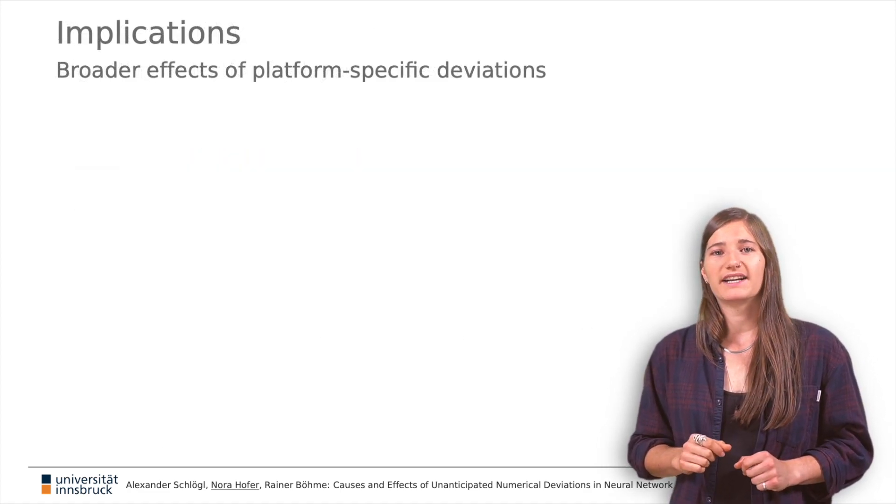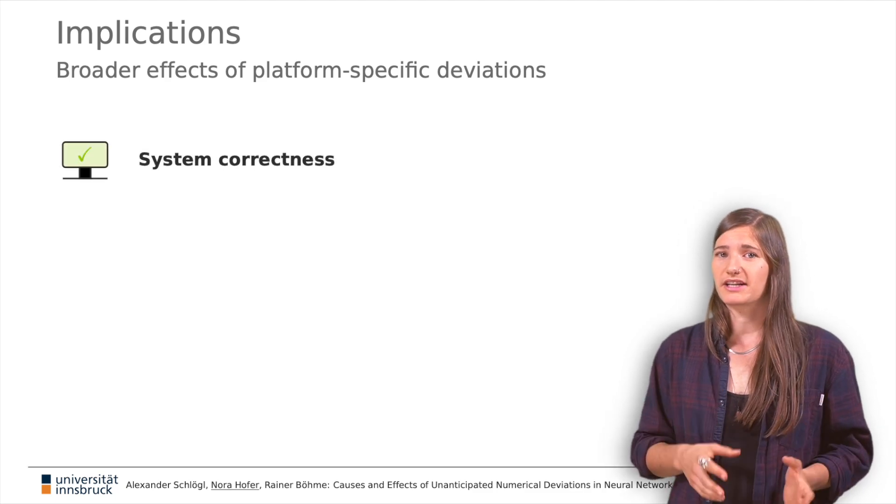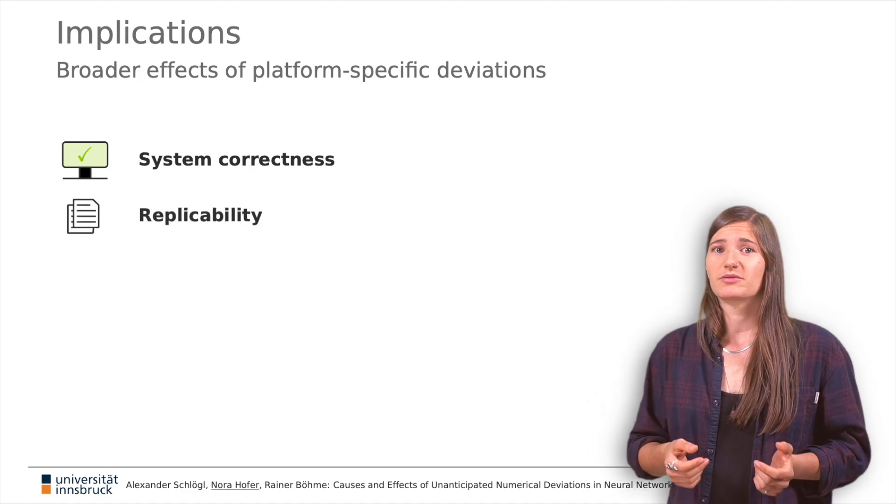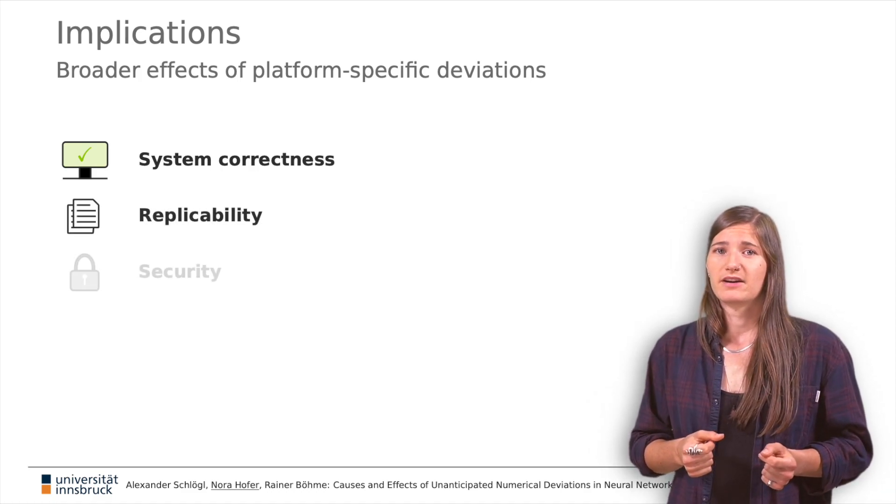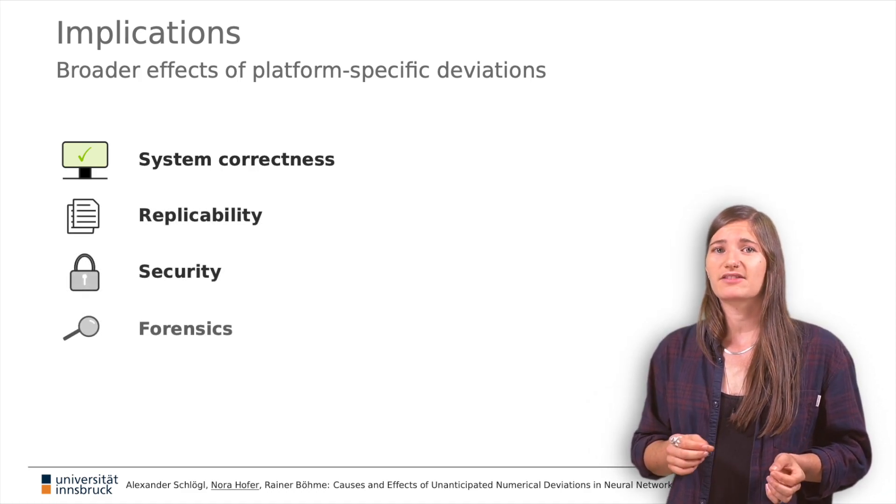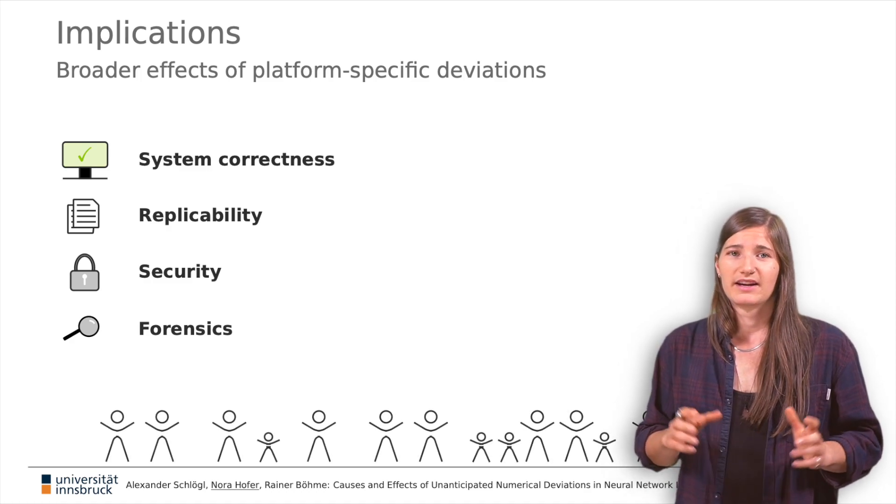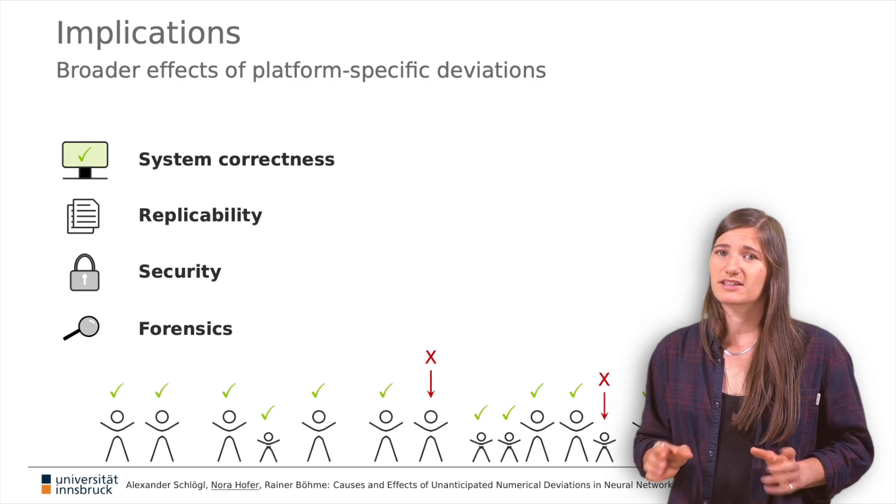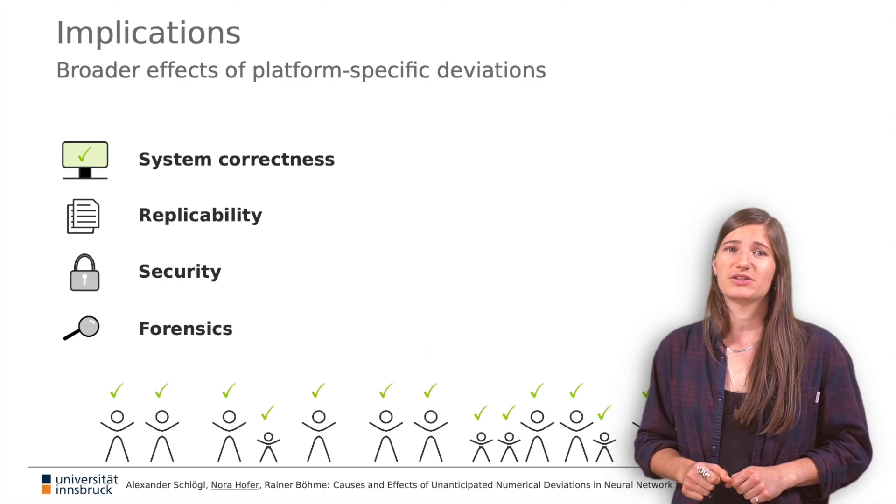Clearly, our findings have implications for machine learning engineers who want to test system correctness with reference values, for researchers concerned with replicability, for security and forensics and for society at large. After all, an automated decision affecting people should not depend on what hardware has been used to evaluate a model.